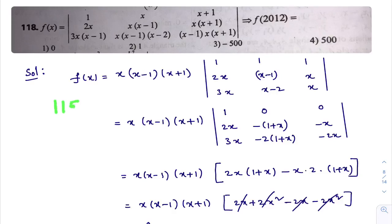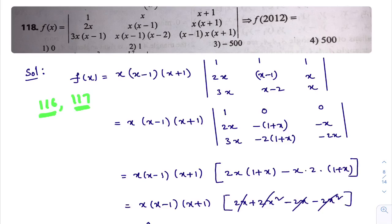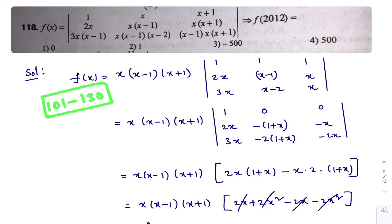In the previous class we learned up to question number 115, covering Determinants Objective JEE. In this class we will learn from question number 116 to question number 130. Questions 116 and 117 are differentiation-related problems, so we'll do those later. Also, this weekend's syllabus has been reduced from 101–150 to 101–130 due to some reasons, so we are covering only 30 questions this week.